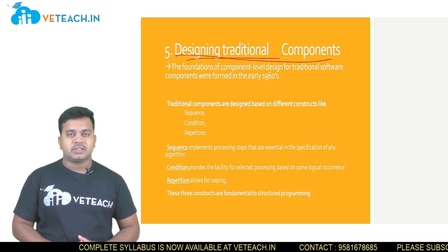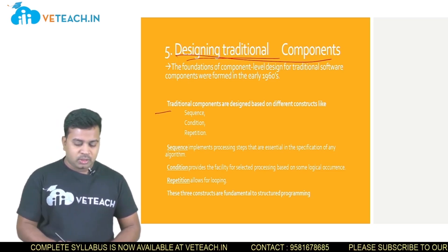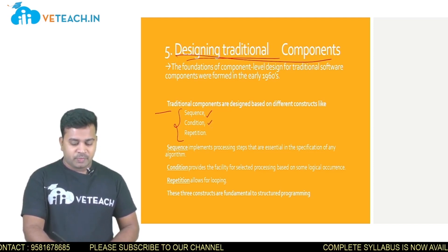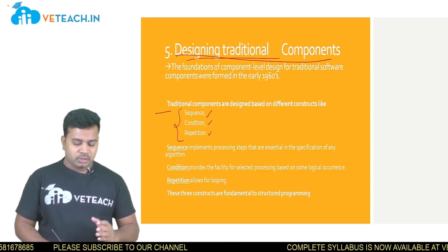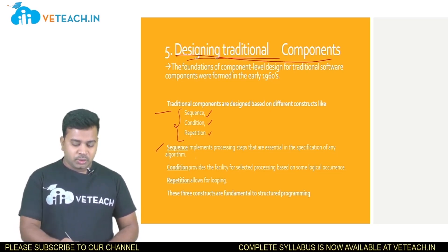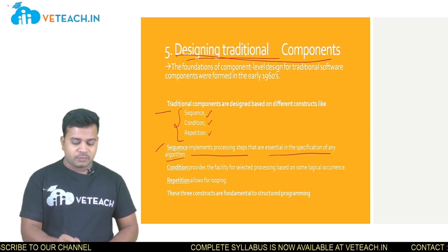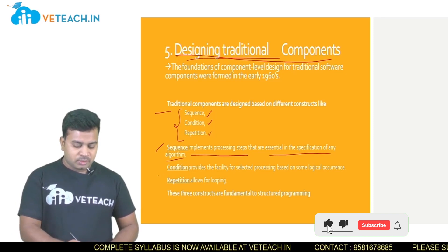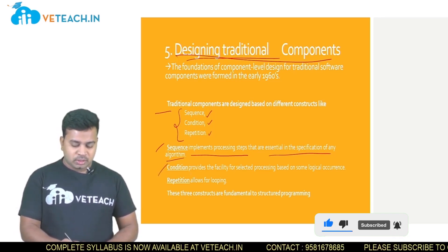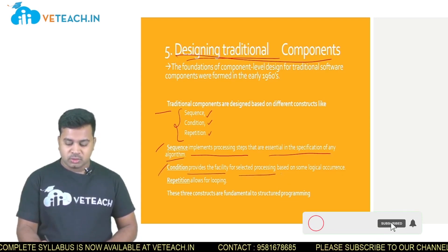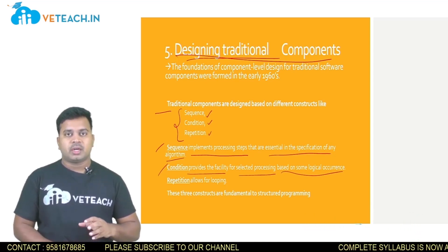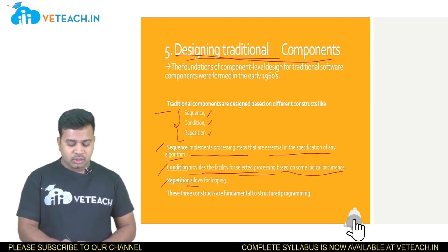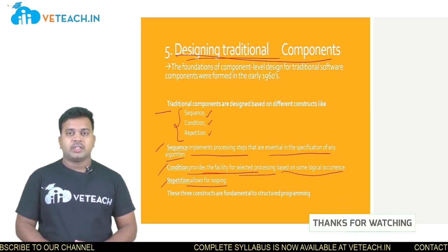The final topic in this video is designing traditional components. There is an approach for designing traditional components involving three steps: sequence, condition, and repetition. Sequence implements processing steps that are essential in the specification of any algorithm — everything should be represented in a sequential manner. Condition provides a facility for selecting processing based on some logical occurrence — conditional logic is applied. Repetition allows for looping. This is the way of designing traditional components.